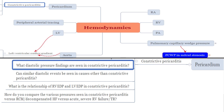Today we'll be talking about what changes in pressure occur during the diastolic phase in cases of constrictive pericarditis. When we mind map, we are under hemodynamics, talking about the pericardium, and we're going to be talking about these four questions. Go through them for your active recall.